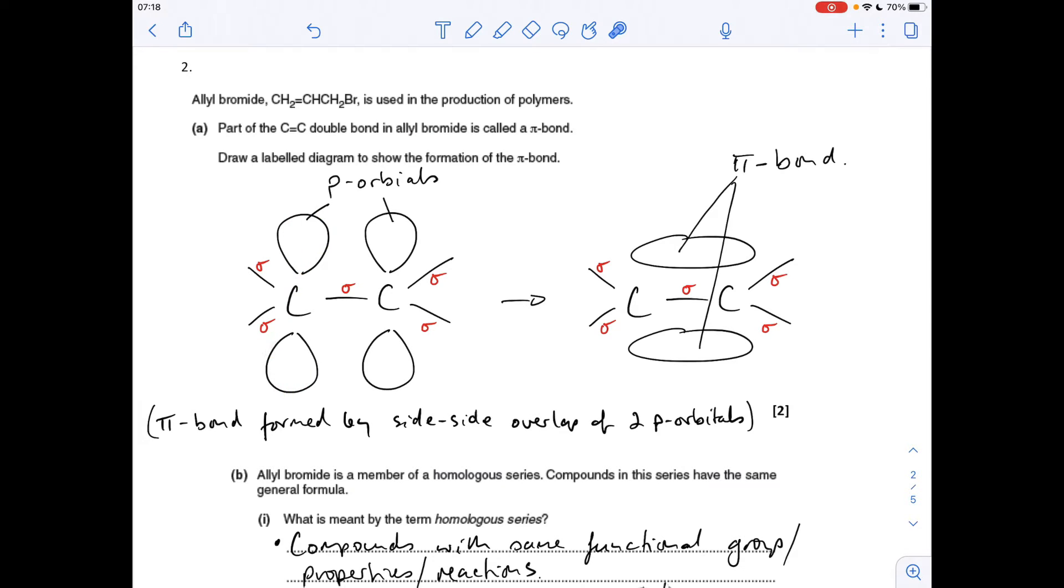And then put your p orbitals on, so one p orbital on each carbon. Remember, there's an upper lobe and a lower lobe. They're going to overlap side-to-side and create this region of space above and below the carbons, and that's your pi bond.